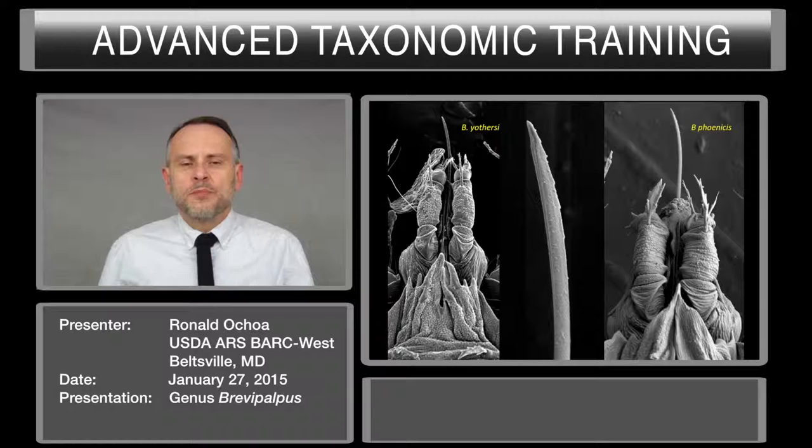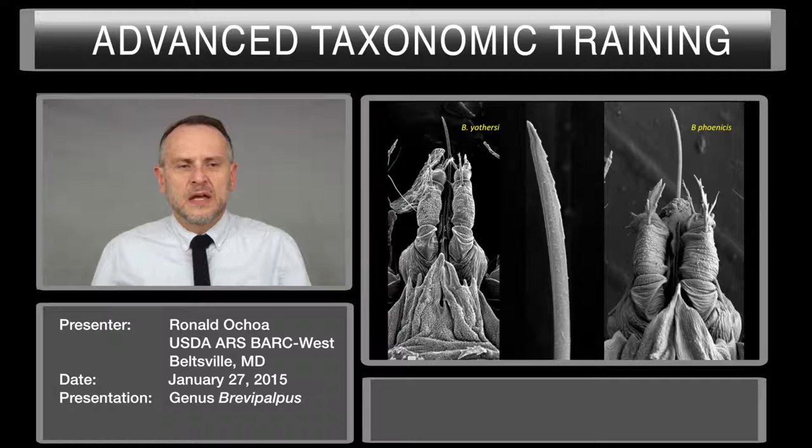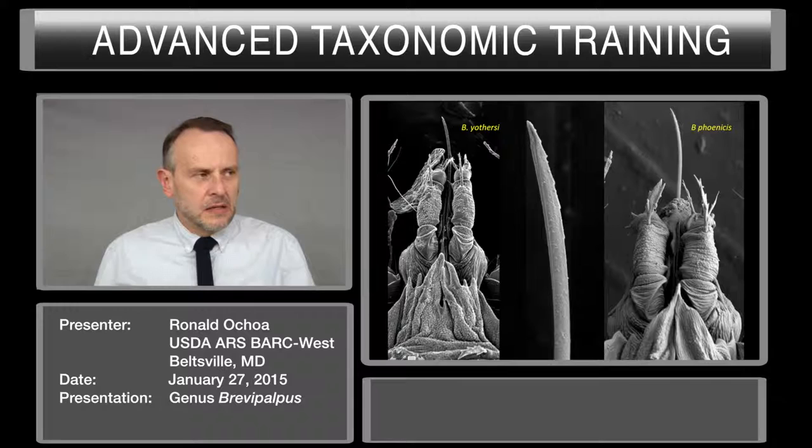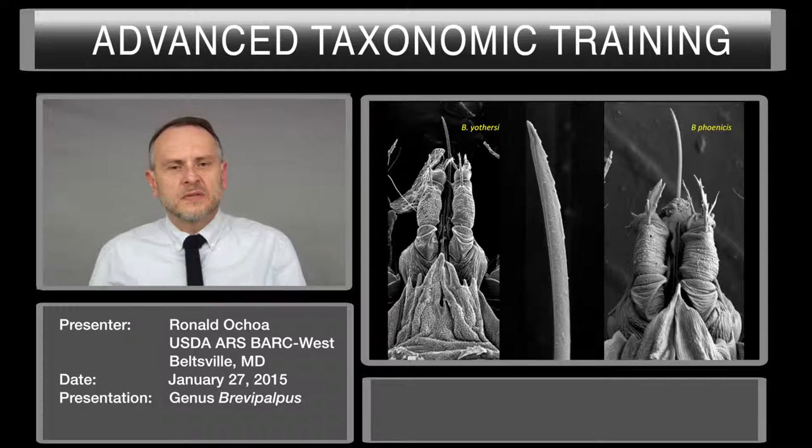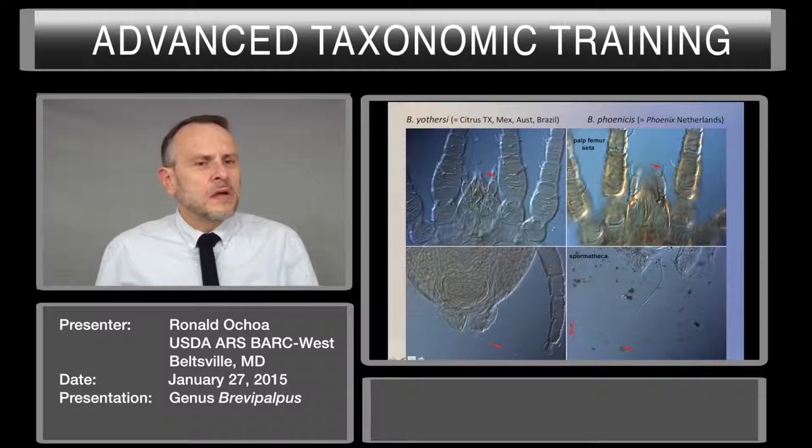Both mites are very similar. However, pay special attention to the palp tarsus seta — the dorsal seta here. In yoderi it is slender, while in Brevipalpus phoenicis it is open palmate or leaf-like. That is key to separate these two species.